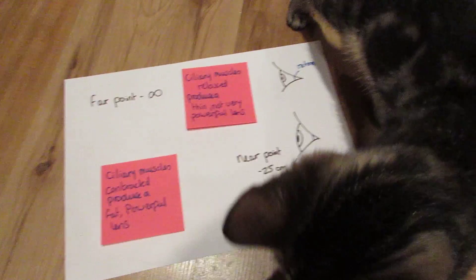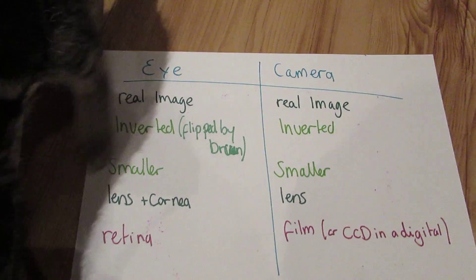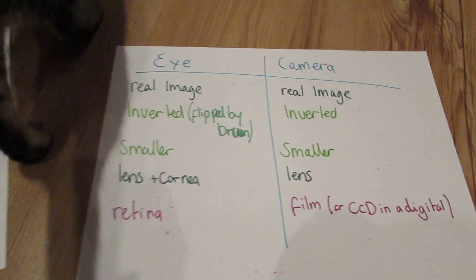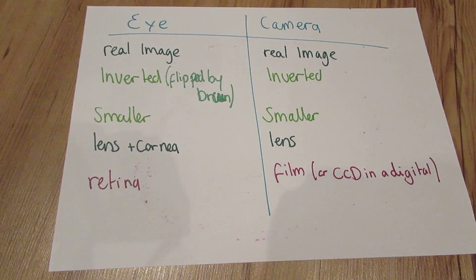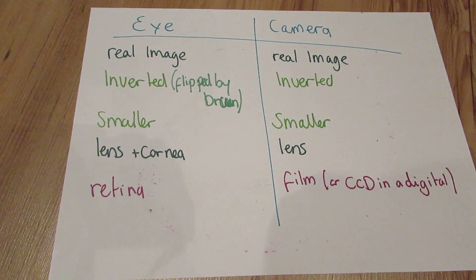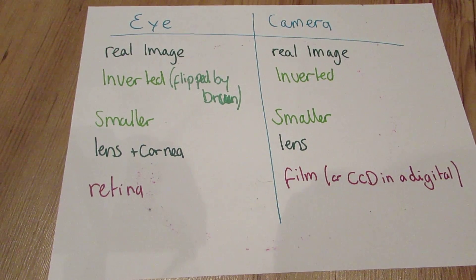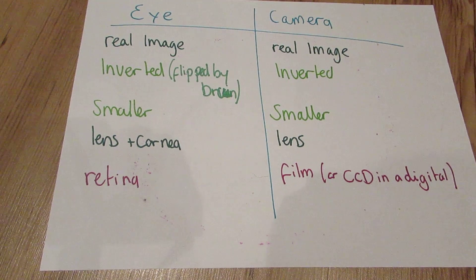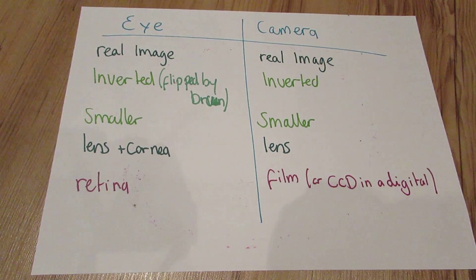You also need to know the difference between the eye and the camera when talking about making images and processing light. Both the eye and the camera produce a real image, and both produce an inverted image — but in our eye it is very cleverly flipped upside down by our brain. Both also produce small images. The eye has the lens and the cornea for focusing, whereas the camera just has the lens. The eye has the retina for the image to be projected onto, where the camera uses a film or a CCD in a digital camera.